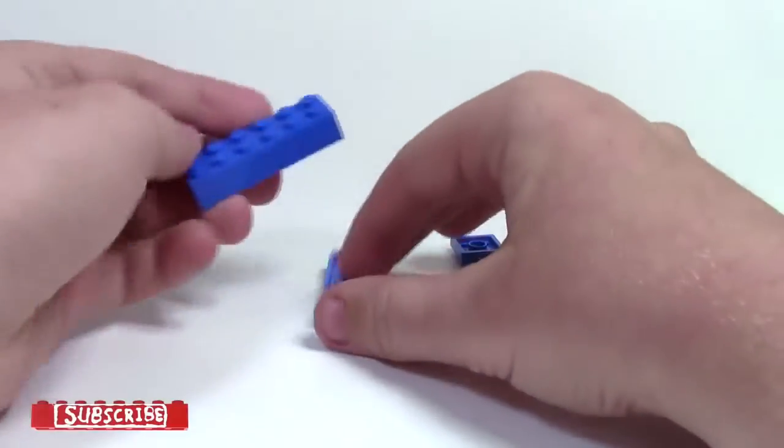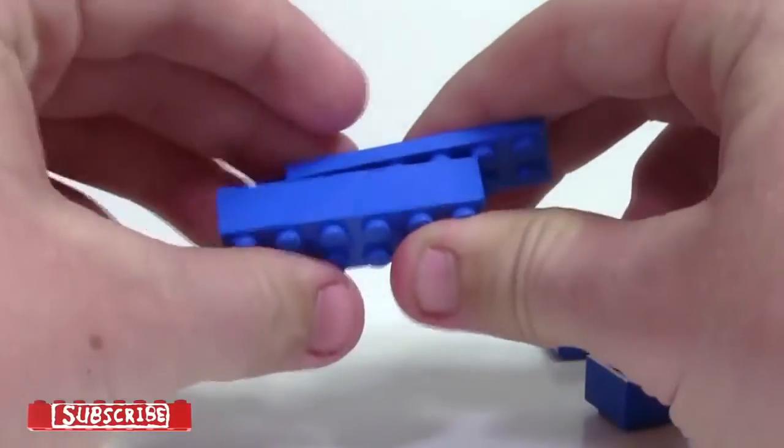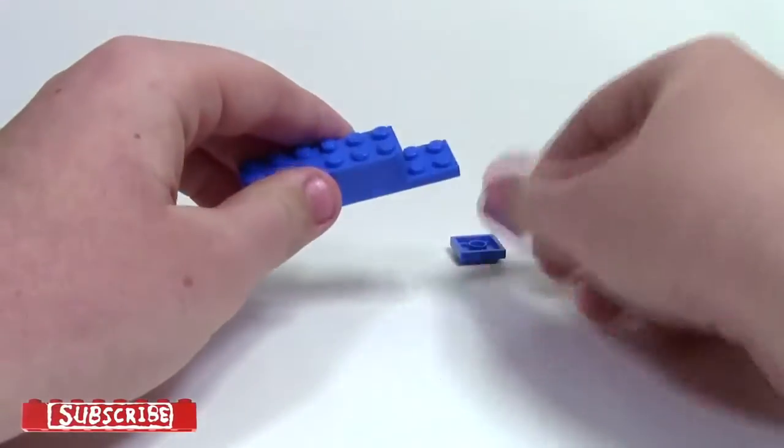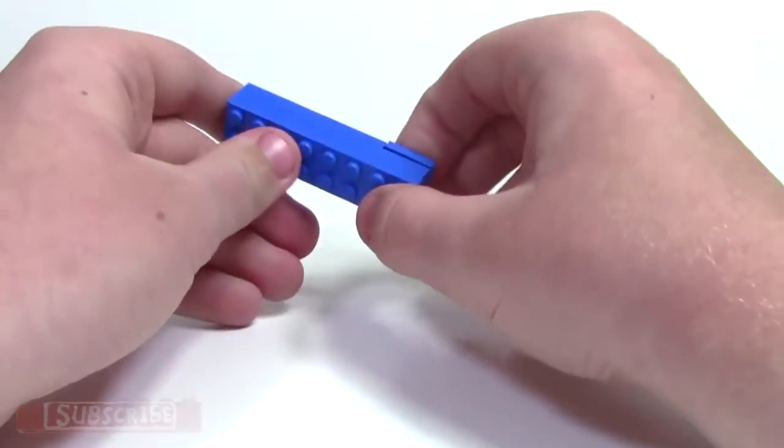To make the first part of the contraption, what you're going to need to do is take your 2x6 plate, as well as your 2x6 brick, and stack them on top of each other, leaving two studs on each side. Next, you're going to take your 2x2 brick, put it here, and your 2x2 plate, and put it here.